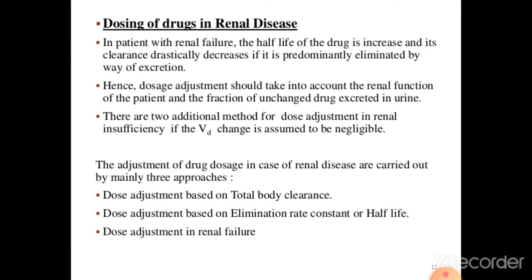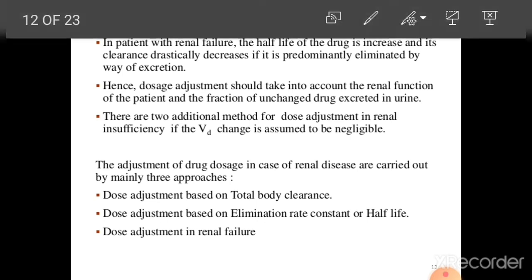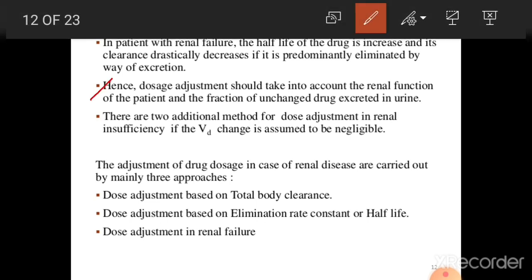Dosing of drugs in renal diseases: in patients with kidney failure, the drug half-life increases, drug availability increases, and toxicity of the drug increases because the drug may not be eliminated via renal organs. Hence, dose adjustments should be made accounting for the renal function of the patient, and the fraction of unchanged drug excreted in the urine. The adjustment in renal disease is carried out mainly by three approaches.